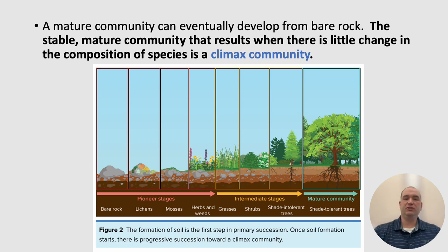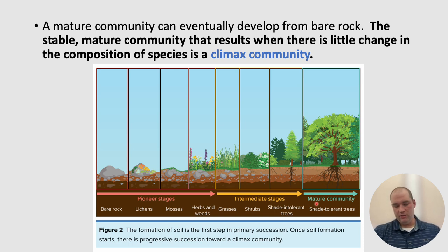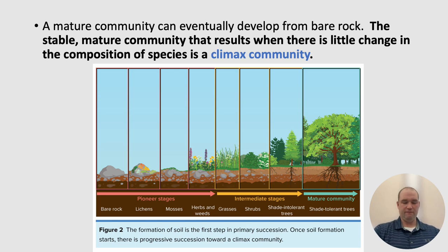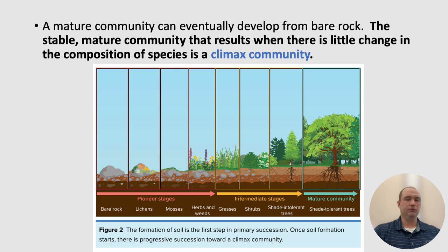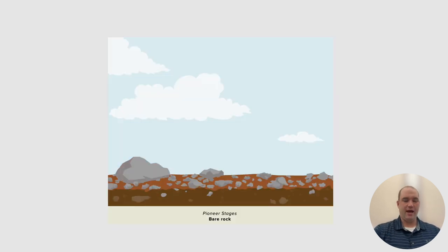A mature community can eventually develop from bare rock. The stable, mature community that results when there is little change in the composition of the species is called the climax community. The formation of soil is the first step in primary succession, and once that soil formation starts, it progresses to our climax community. In the temperate deciduous forest, this would be oak, hickory, and maple trees — those hardwood trees.